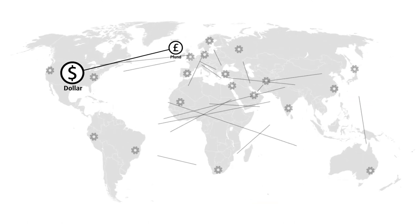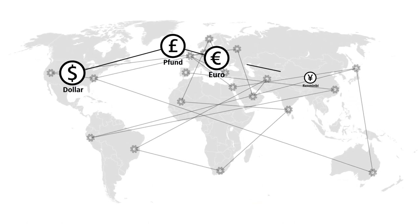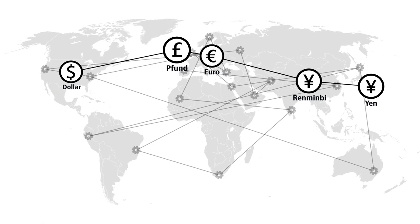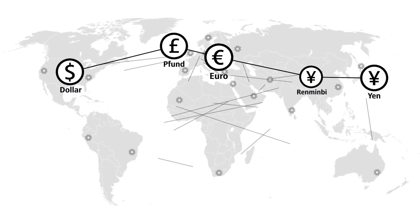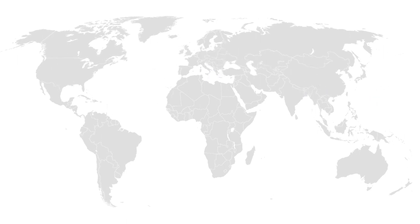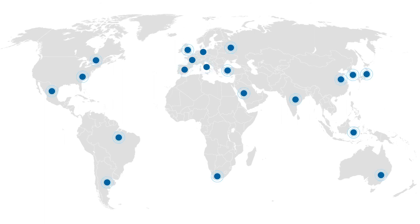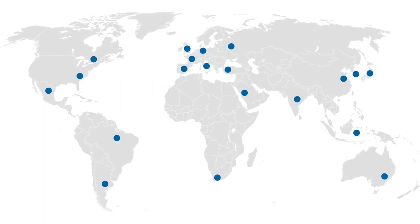At the same time, it monitors the financial and monetary system in order to identify disruptions and dangers to the economy at an early stage and take countermeasures where necessary. To this end, the Bundesbank works in German, European and international institutions and committees to secure financial stability.